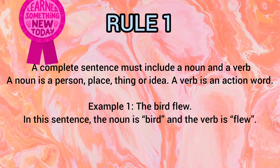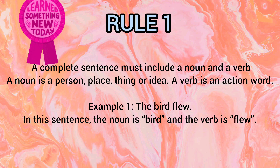Rule number 1: A complete sentence must include a noun and a verb, in which noun is the name of a person, place, thing or idea, and verb is the action word. For example, 'The bird flew.' In this sentence, the noun is 'bird' and the verb is 'flew.'